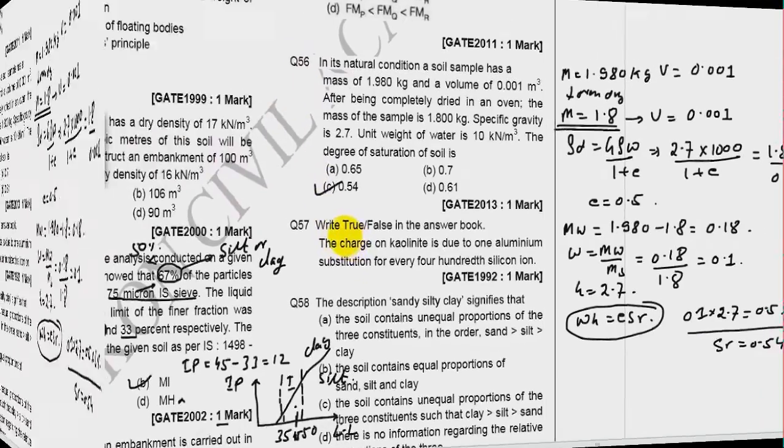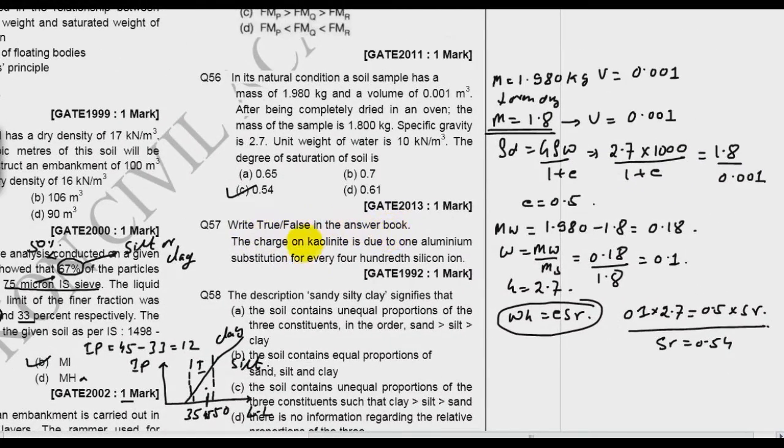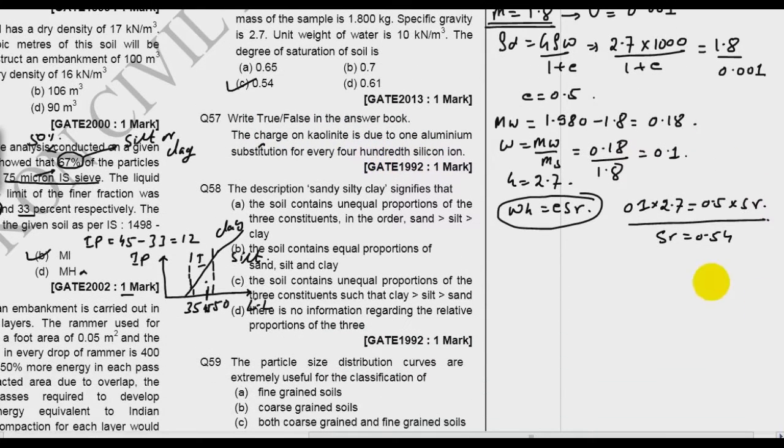The next question: write true and false in the answer book. The charge on the kaolinite is due to one aluminium substitution for every 400 silicon ion. Not absolutely correct. This is a level 3 question, we are not doing PhD on kaolinite. In the exam if you find these types of questions I advise you to skip it because these are level 3 questions. We are not reading chemistry, so I advise these types of questions are just a wastage of time.